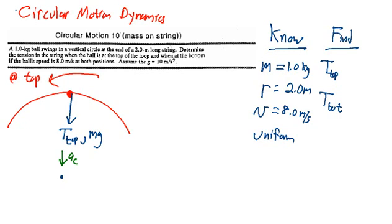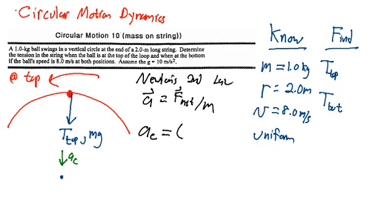And we can indicate that the direction of the centripetal acceleration is going to be towards the center of the circle. So what I would want to do is to apply Newton's second law to this situation. So I'm going to say that the acceleration equals the net force divided by the mass, and now I apply that to our specific case. The acceleration is going to be called the centripetal acceleration, and that points towards the center. And then the net force is going to be the sum of the tension at the top, plus the weight, because both of those vectors are in the same direction. And I divide that by the mass.